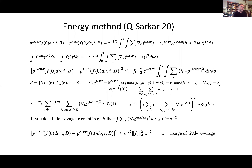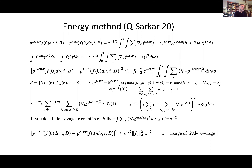Initial data in L² is a dense class. I mean dense in the topology of uniform convergence on compact sets. The red curve is the function I'm trying to approximate, and the blue is my approximating thing on interval [−L, L]. I want to approximate with error delta — so I put little delta²-spaced intervals in there, make little delta errors at each end of those intervals, and patch in Brownian bridges in between, or in the discrete case random walk bridges. You can check that the L² cost of doing such a thing is bounded. So with initial data bounded in L², I can approximate anything arbitrarily closely.